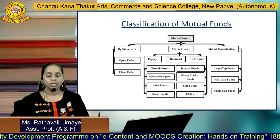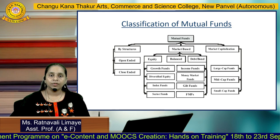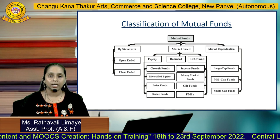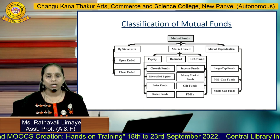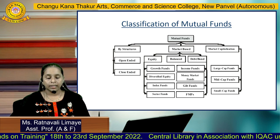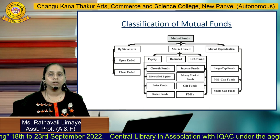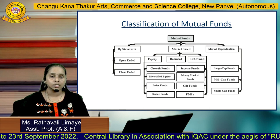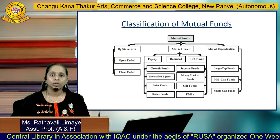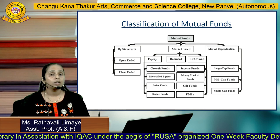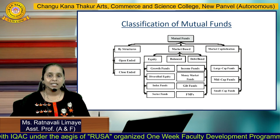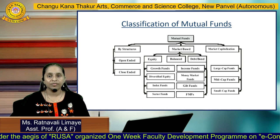Money market funds are for a very short time period — overnight funds up to 90 days or maximum up to one year. Gilt funds invest in government securities like government bonds or debentures and are suitable mainly for cautious investors who prefer steady or regular returns. FMPs — Fixed Maturity Plans — are for a fixed term, normally for some number of months up to a few years.